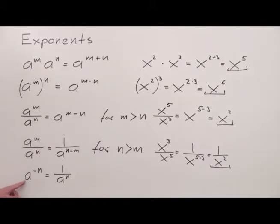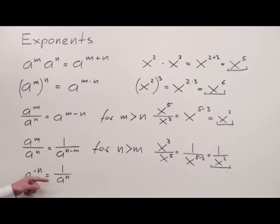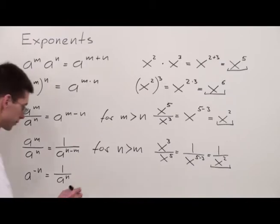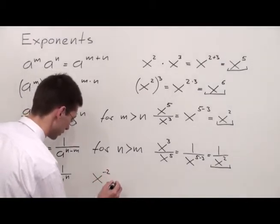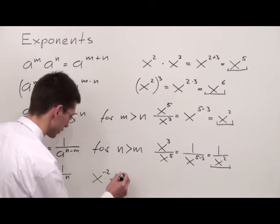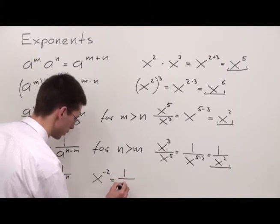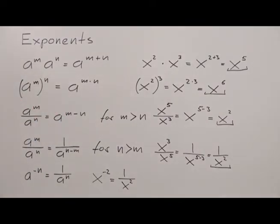The next formula is for negative exponents. Anytime we have a term with a negative exponent, we are supposed to bring that term to the denominator and the negative exponent converts to positive. For example, x to the negative second power is going to be nothing else but 1 over x to the second power.